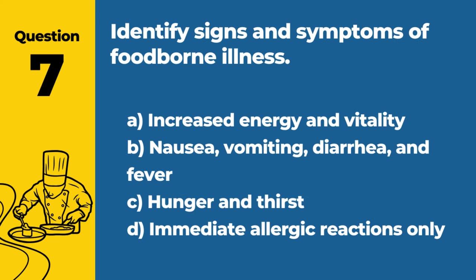Question 7. Identify signs and symptoms of foodborne illness. Answer: B. Nausea, vomiting, diarrhea, and fever. These are common symptoms of foodborne illness caused by the ingestion of contaminated food.